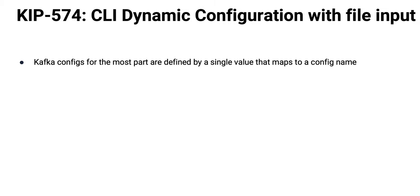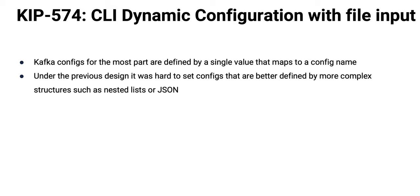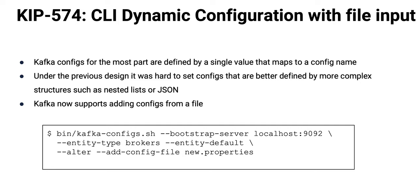KIP-574 is an improvement to the Kafka configs shell script. This has always let us set individual config parameters one at a time, with a fairly interesting array of command line switches. But if you wanted to script a bunch of those — have your configuration act like code — you'd have to have a shell script that just called kafka-configs over and over again. The opinion of KIP-574 is that it's 2020 and configuration might be code. Now we can point to a file that will pull in those configs rather than invoking the config command repeatedly. It's a much easier way to read, write, and collaborate around that bundle of configs.